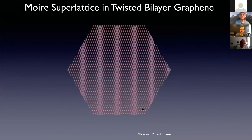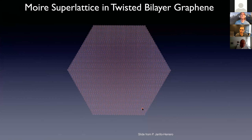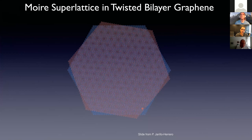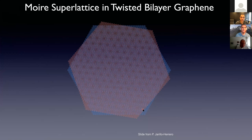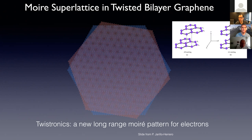Let me quickly remind you: the way we think about creating this new electronic system is by taking 2D materials and stacking them on top of one another and twisting them relative to one another. This twisting creates basically an interference between the two atomic lattices, which gives you what we call the moiré pattern. This is an additional potential for electrons to move through as we think about the electronic structure of this combined system.